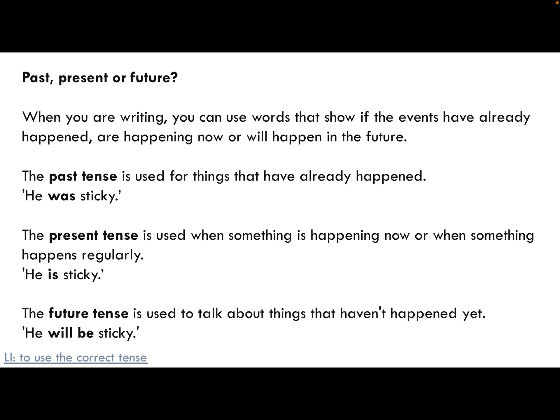So we call it the past tense, and that is for things that have already happened — it is in the past. We use things like 'he was sticky' or 'he ran to the park.' The present tense is used when something is happening now, or if something happens regularly. 'He is sticky.' The future tense is used to talk about things that haven't happened yet but likely will — 'he will be sticky.'